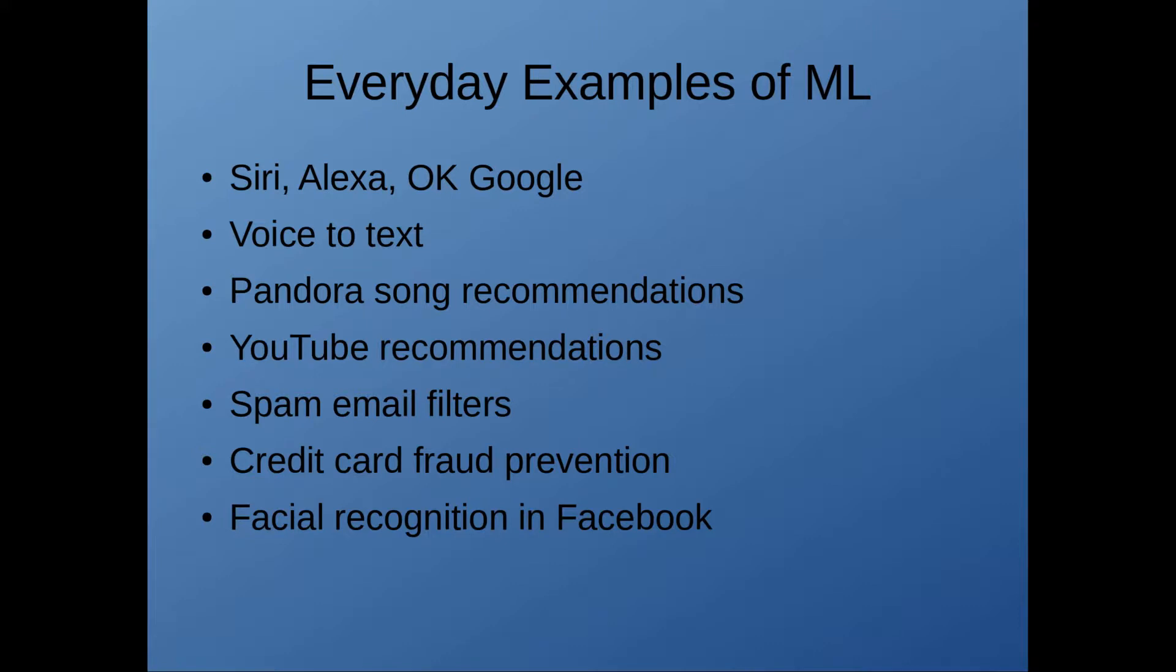So another example would be Pandora songs. So Pandora classifies music based on a whole variety of factors to recommend things that they think you will like. And you train that algorithm by giving thumbs up or thumbs down on various songs. YouTube works in a similar way where they find content that is similar to what you're watching, and that happens to match up with what they want you to see.